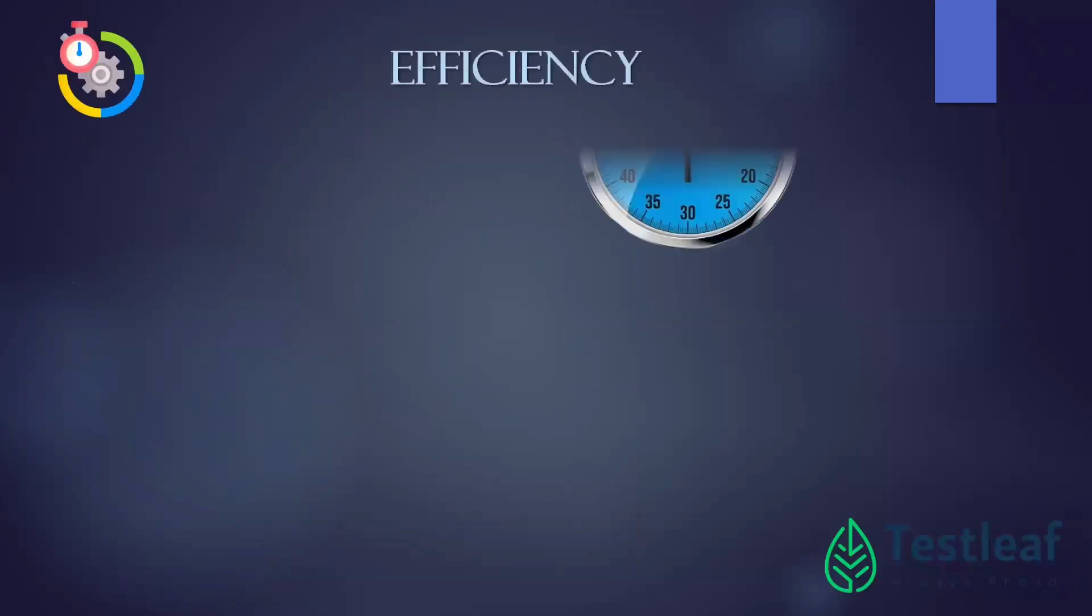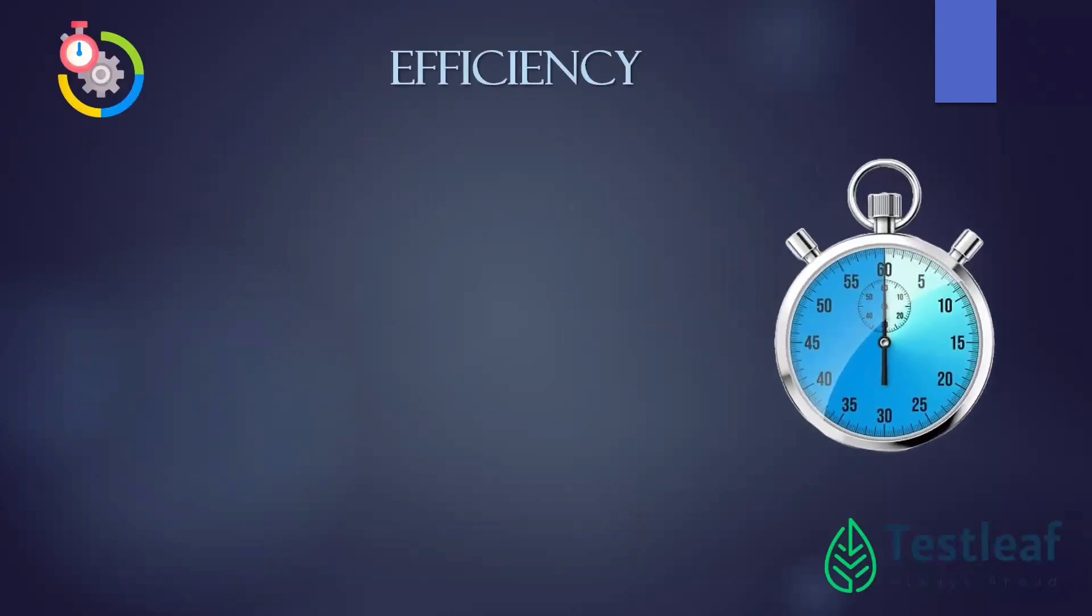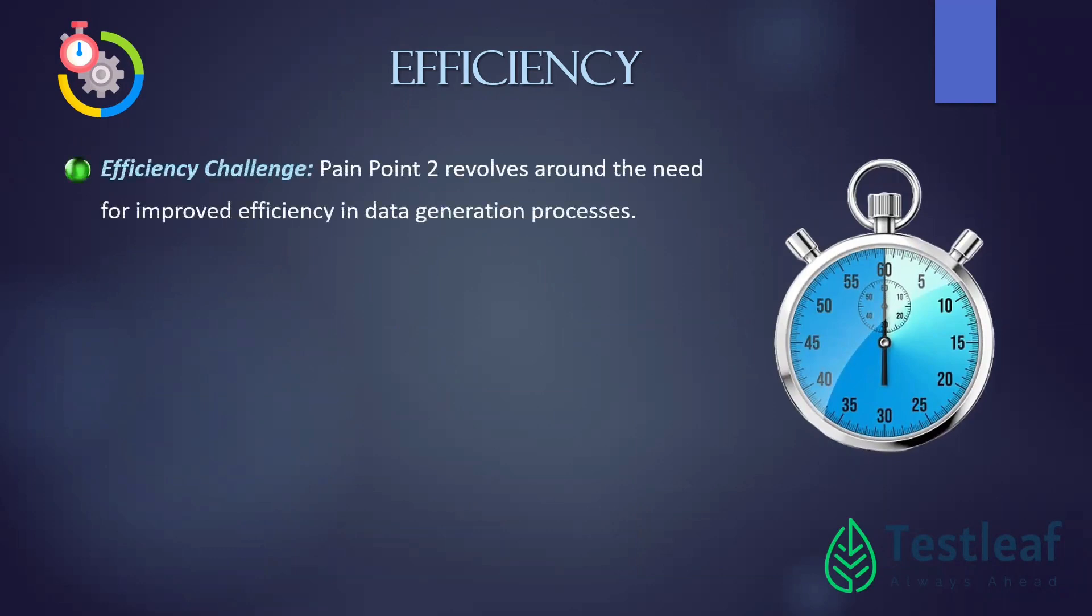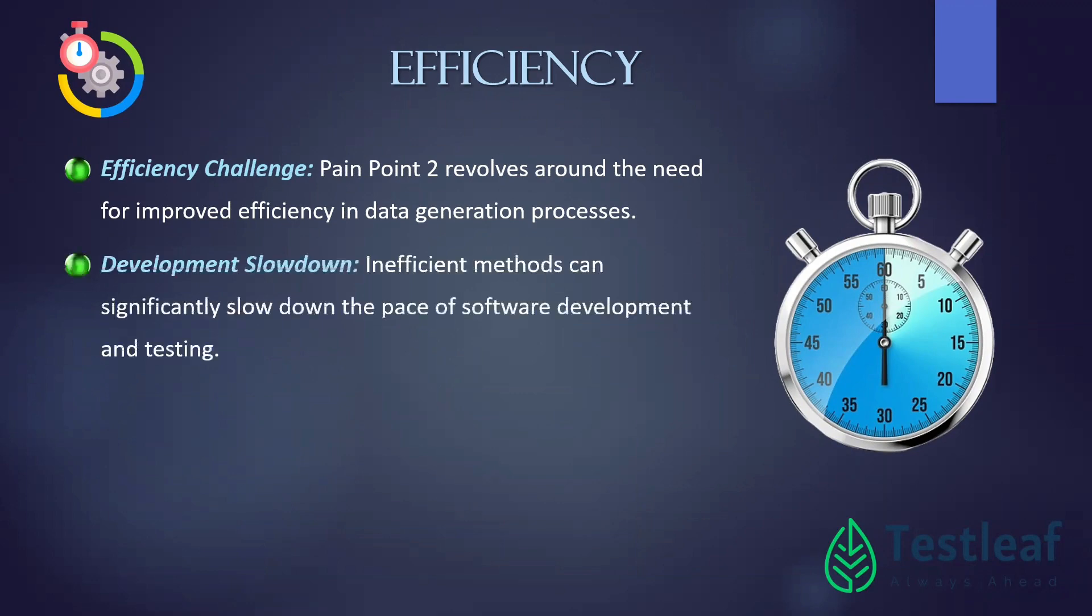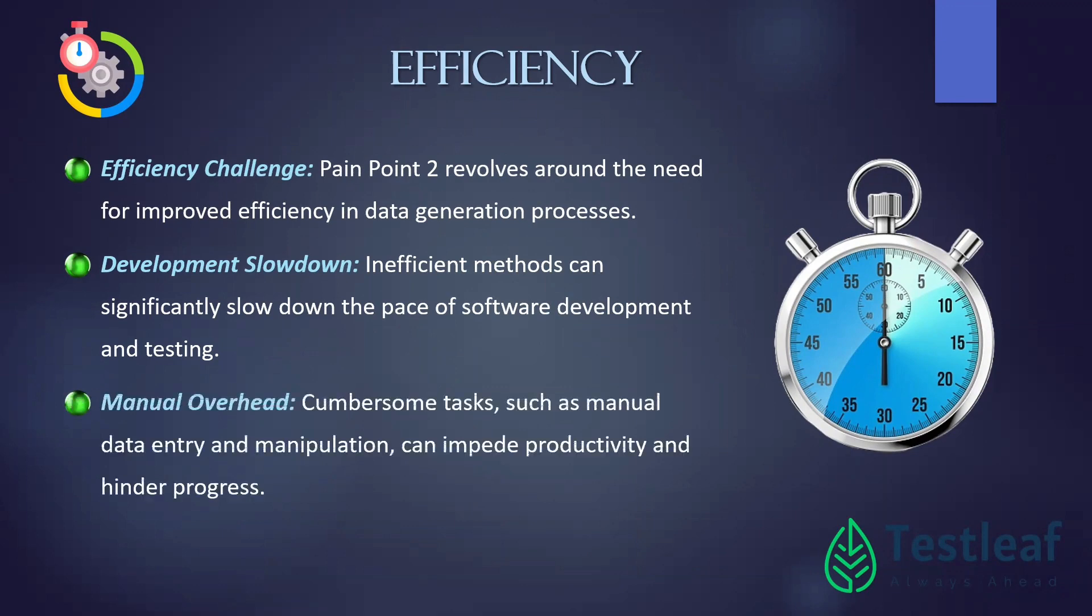The second pain point is efficiency. Writing code to generate test data from scratch can be a time-consuming process. We have better things to do, right? Faker API simplifies this process. With just a few lines of code, you can generate a wide range of data. It's quick, it's easy, and it saves you valuable time and effort. This means you can focus on what truly matters, like writing effective test cases.